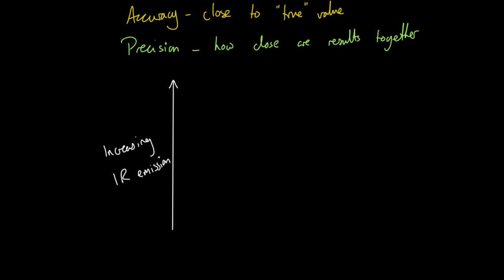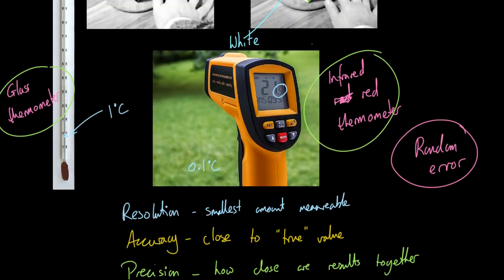So at the very bottom, the worst surface is the shiny metallic surface. Next one up is the white surface. Next one up after that is the shiny black surface. And finally, after that, the matte black surface, that being the one that emits the most infrared radiation when hot.